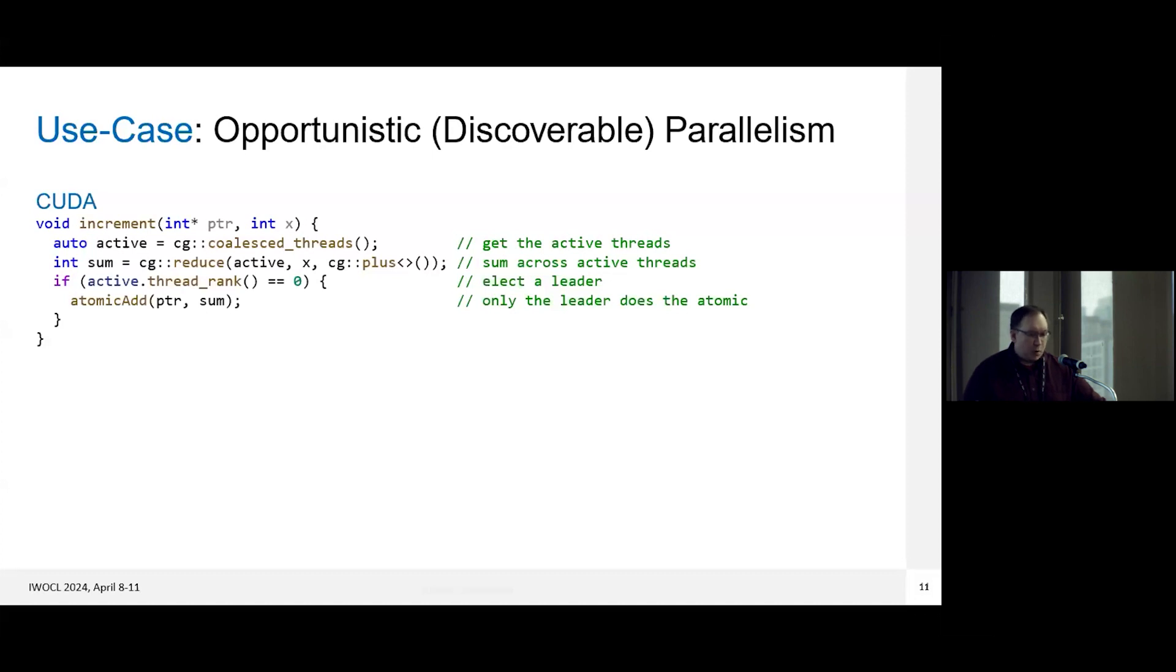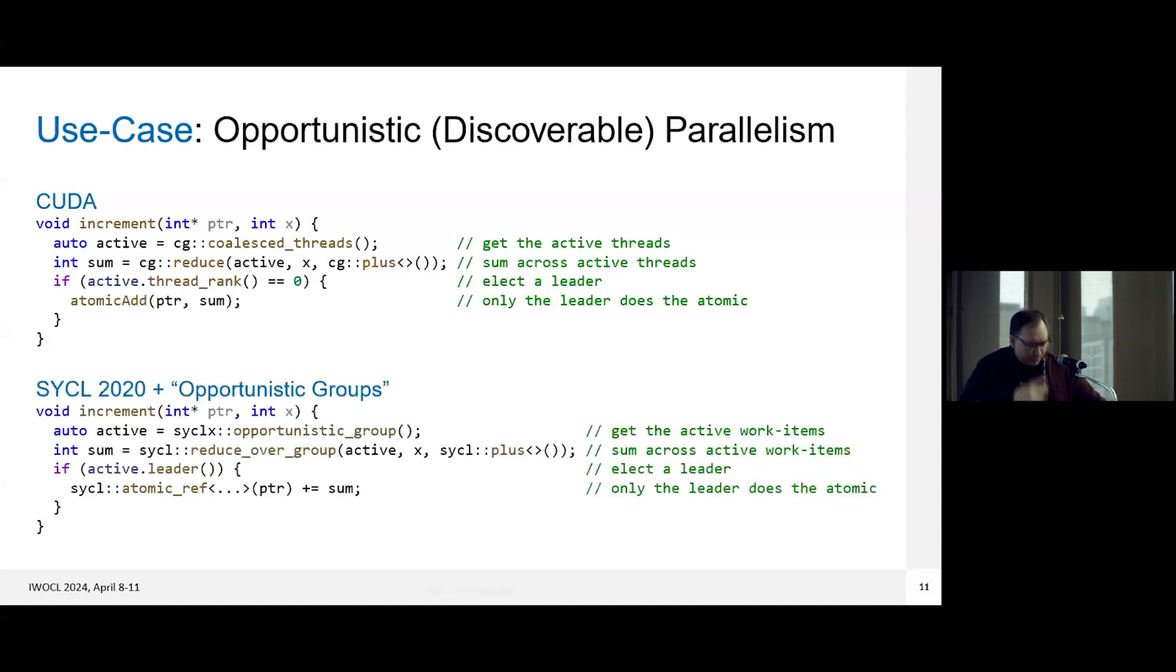So in CUDA, you can use that using cooperative groups, you can create a group that's your coalesced threads, perform a reduction on that, and then you can pick the first thread in that group and have that thread actually do the atomic add of your sum to your memory location. So if we wanted to do that in SYCL, we could do something very similar by defining an opportunistic group that acts very similar to the CUDA cooperative group. And our code looks pretty similar to the CUDA case here, we create our opportunistic group, call our SYCL 2020 group algorithms over that group, and then we can elect a leader in that group, it really doesn't matter which item in the group it is, just only one of them. And then that one item will perform our atomic update.